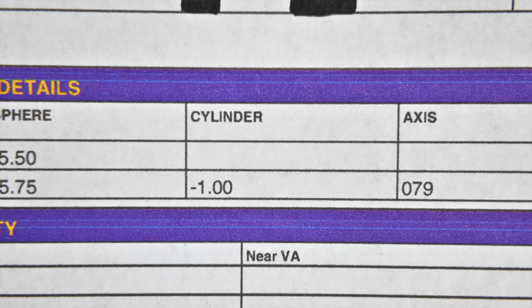If you're someone who doesn't have astigmatism, you may just see either a blank spot here, or it'll read DS for dioptic sphere, basically meaning there's no correction for astigmatism needed. But if you do see some numbers in this column, like you see here on mine, that means the glasses do correct for astigmatism.